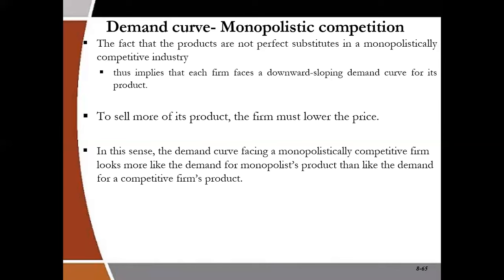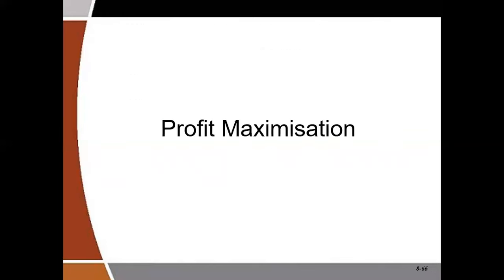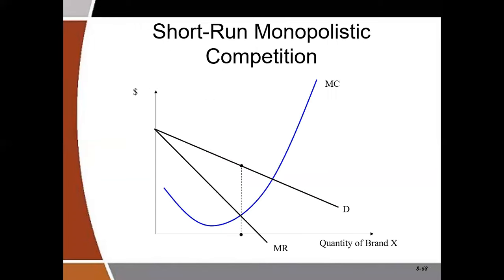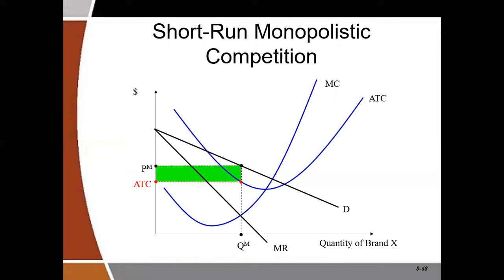A monopolistic competition firm has the same demand curve as a monopoly and the same features. Profit is maximized where marginal revenue is equal to marginal cost. When it comes to calculations, we treat monopolistic competition like a monopoly — the same marginal revenue curve, the same demand curve, and the same procedure for determining profit.